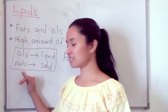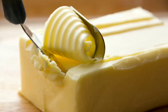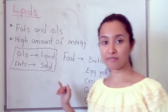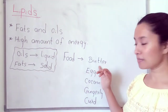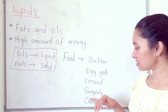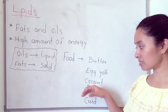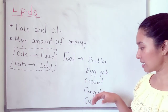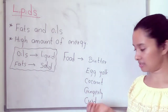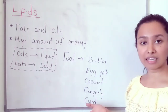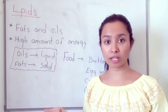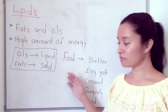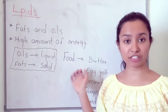Fats are solid in nature and found abundantly in animals. Food items rich in lipids include butter, egg yolk, coconut, coconut oil, gingelly oil, curd, and meat. You can find out more examples of food items rich in lipids.